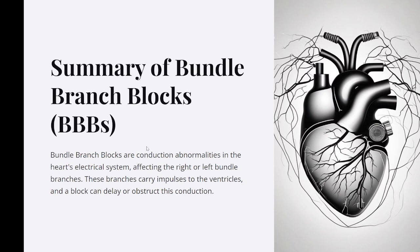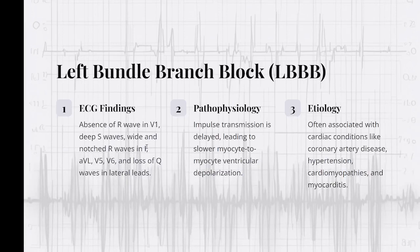Summary of bundle branch blocks (BBBs). Bundle branch blocks are conduction abnormalities in the heart's electrical system affecting the right or left bundle branches, which carry impulses to the ventricles; a block can delay or obstruct this conduction. Left bundle branch block (LBBB): ECG findings include absence of R-wave in V1, deep S-waves, wide and notched R-waves in leads I, aVL, V5, V6, and loss of Q-waves in lateral leads. Pathophysiology: impulse transmission is delayed, leading to slower myocyte-to-myocyte ventricular depolarization. Etiology: often associated with coronary artery disease, hypertension, cardiomyopathies, and myocarditis.